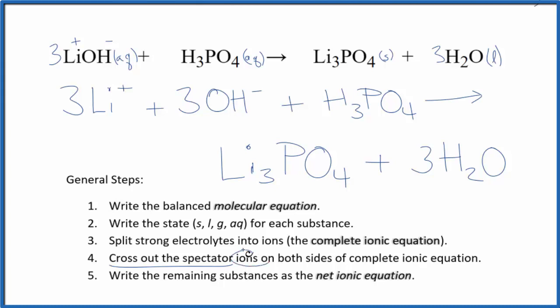Now we're going to cross out spectator ions. They're on both sides. So if I look, I don't see anything that's the same on both sides. So the complete ionic equation, it's the same as the net ionic equation. So this is the net ionic equation for LiOH plus H3PO4.